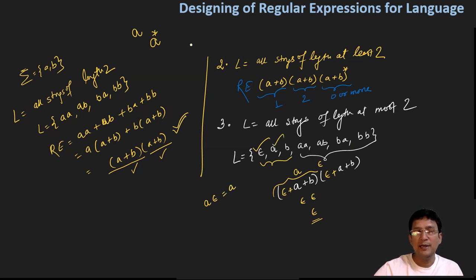Epsilon and epsilon gives epsilon. Epsilon and A is A. Similarly, epsilon and B is B. This will be actually the regular expression (epsilon + A + B)(epsilon + A + B) for the language that has strings of length at most two. This is very simple to design. Next lecture we will discuss more objectives. Thanks for watching.